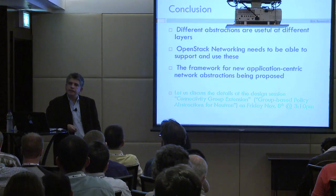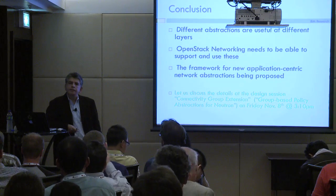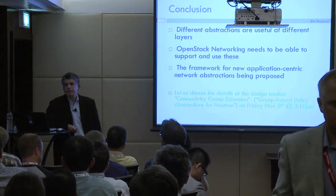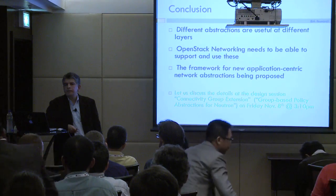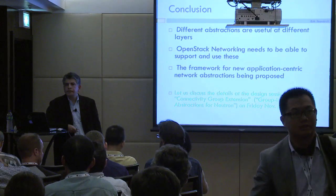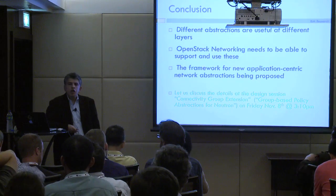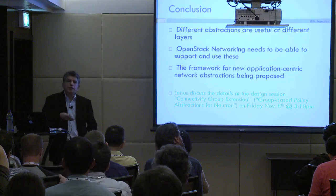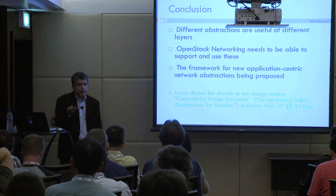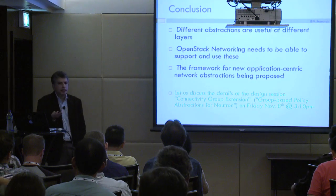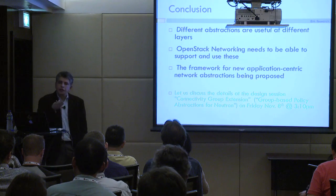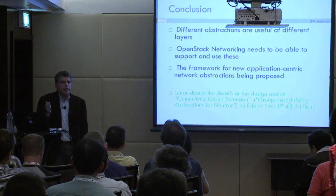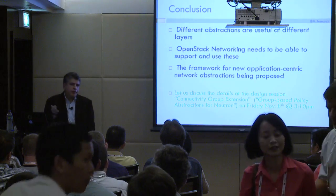Q: You add a new server into a web pool, and whatever policy is defined for that pool needs to be propagated to that server. But if you have another policy — say the web server needs to talk to the back-end server — how do you make sure the back-end can also accept the new web server you just added? A: These are details to be worked out. But the idea is that as resources are updated and connectivity groups get updated, all the policies connected to that particular connectivity group get informed. Through that, you can enforce whatever is required.